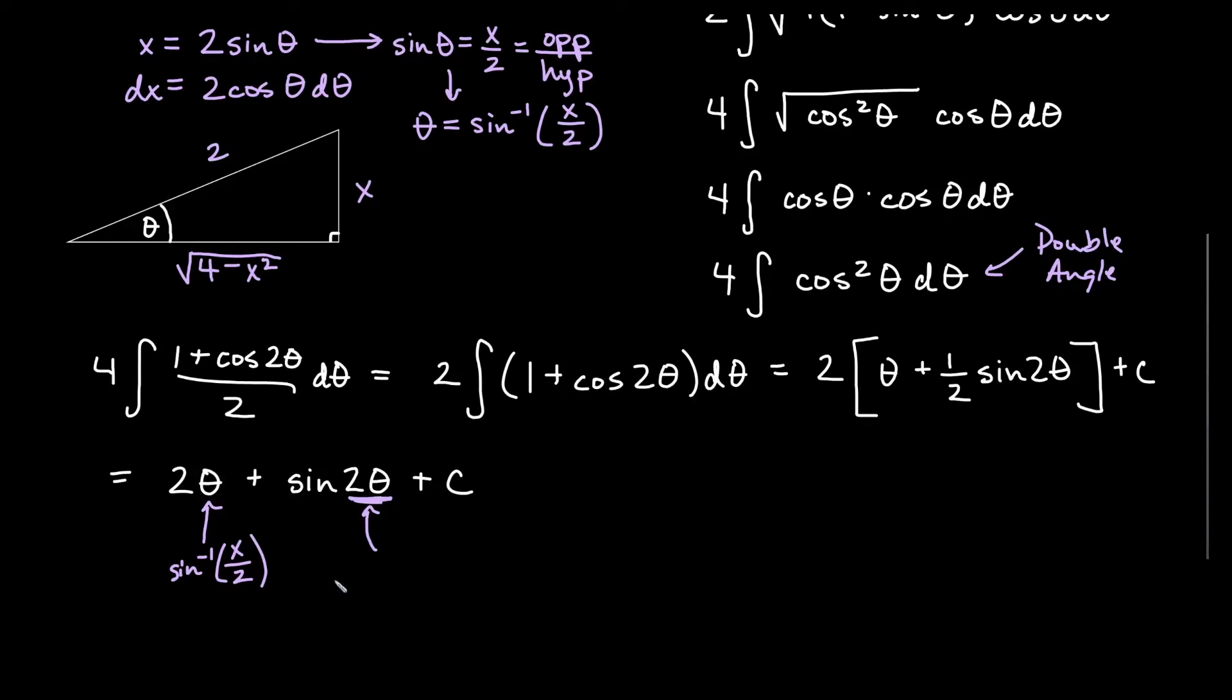So it might be nicer to think of sine 2 theta as 2 sine theta cosine theta if we're unsure of what to do here.